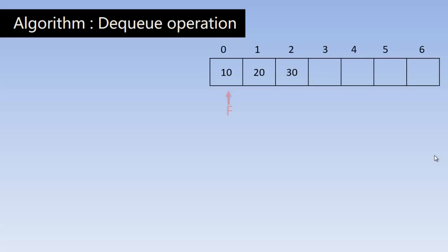Now we will understand the DQ algorithm. This is the status of the queue after inserting three elements: 10 goes to the zeroth index, 20 at index 1, and 30 at index 2. The front pointer points to the first element. The rear is pointing to the fourth position, which is still empty. If you want to insert an element, you go and insert into the location where R is pointing.